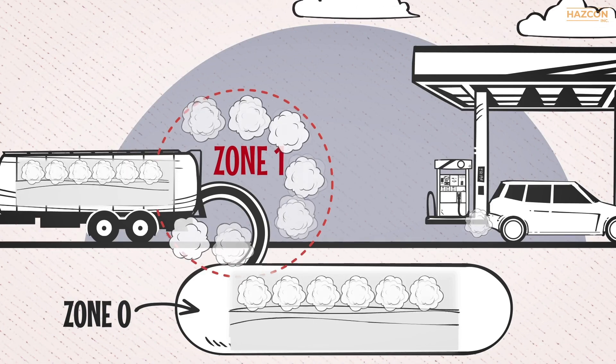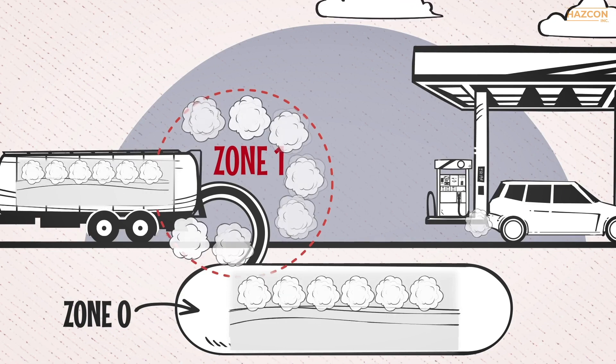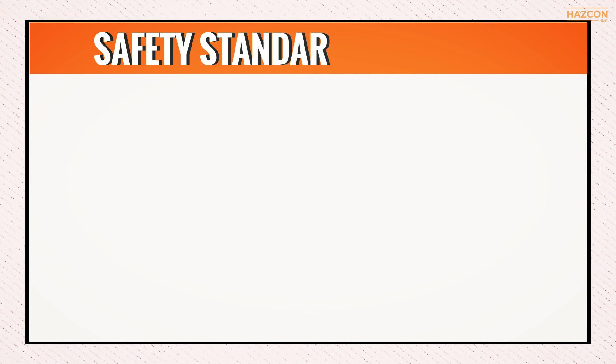Explosive gases can be present under normal operation or if a fault happens. In order to be certified as compliant with safety standards for Zone 1, the product must be protected by one or more of the following nine protection techniques.